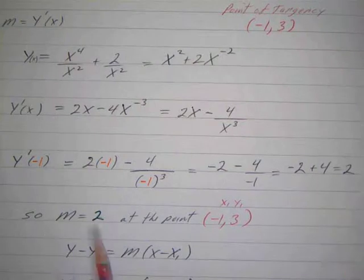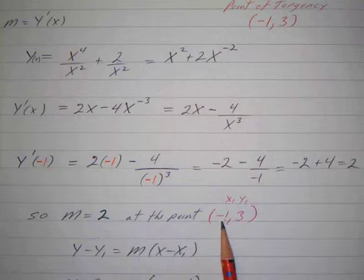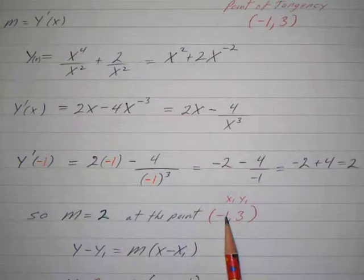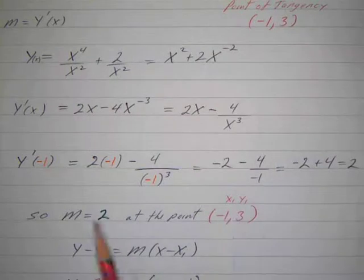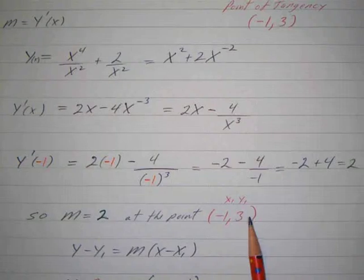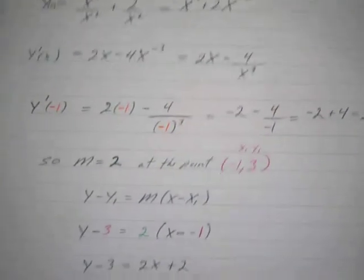So this is my slope, so my slope is 2, and at the point negative 1, that's when x is negative 1, so I've evaluated it, so that's where my slope is. This is the point of tangency, so I just want to find the tangent line at that point.